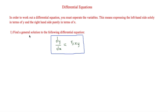For this one we have to find a general solution to the following differential equation. In our first step we're going to split it up into x and y — all the x's on one side and all the y's on the other. We're going to multiply everything by dx, so therefore we get dy is equal to dx times by 5xy.